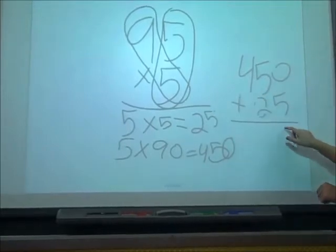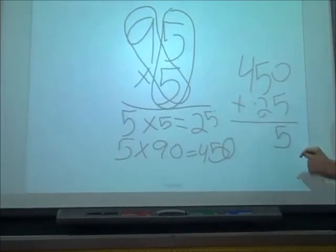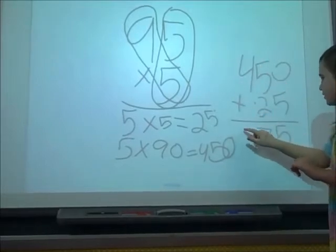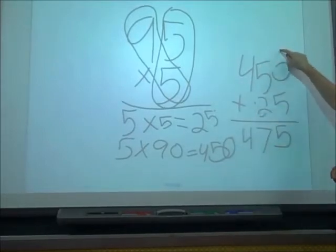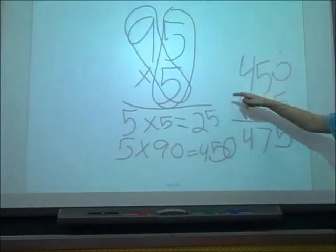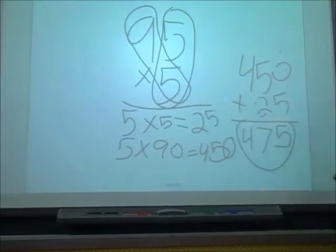450 plus 25. So 5 plus 0 is 5, 5 plus 2 is 7, and 4 plus nothing is 4. Make sure to line it up with ones, tens, and hundreds, and your answer is 475.